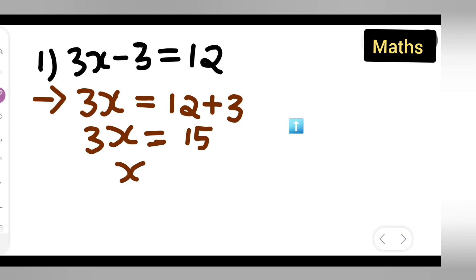Now x equals 15 divided by 3. You can cancel: 3 ones are 3, 3 fives are 15.